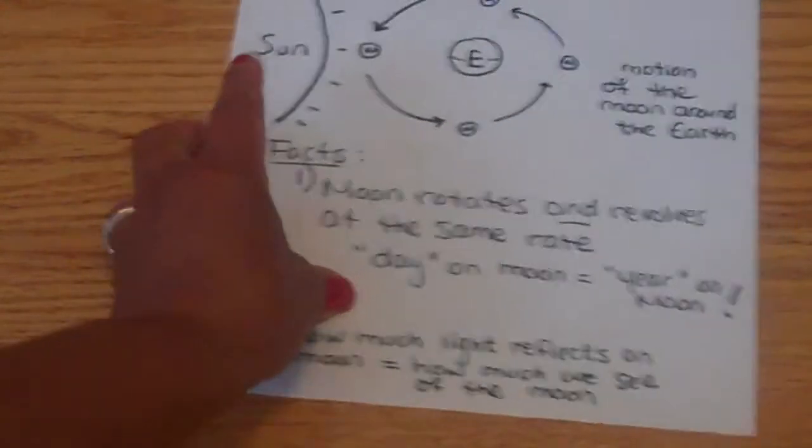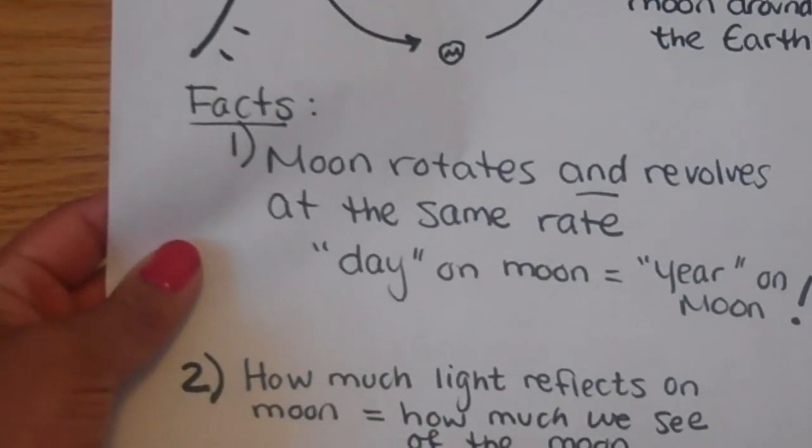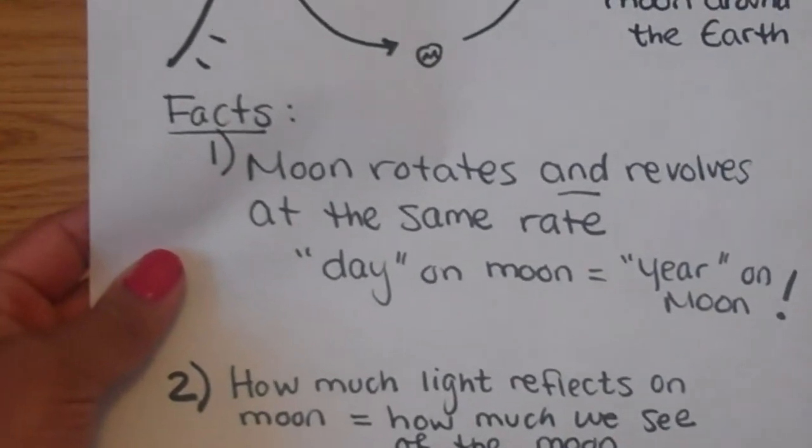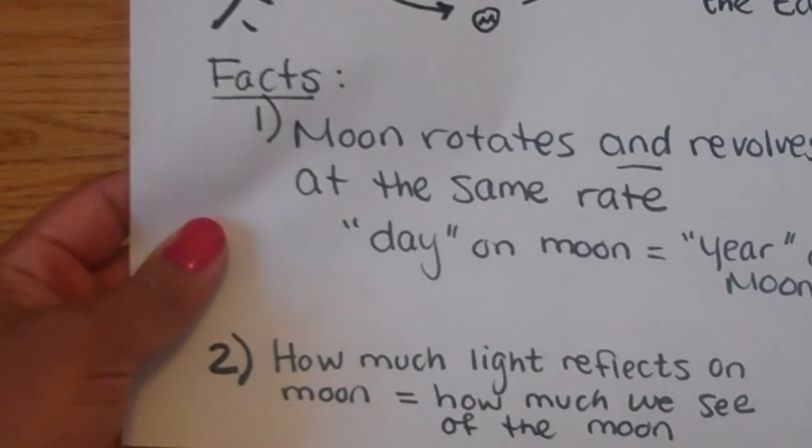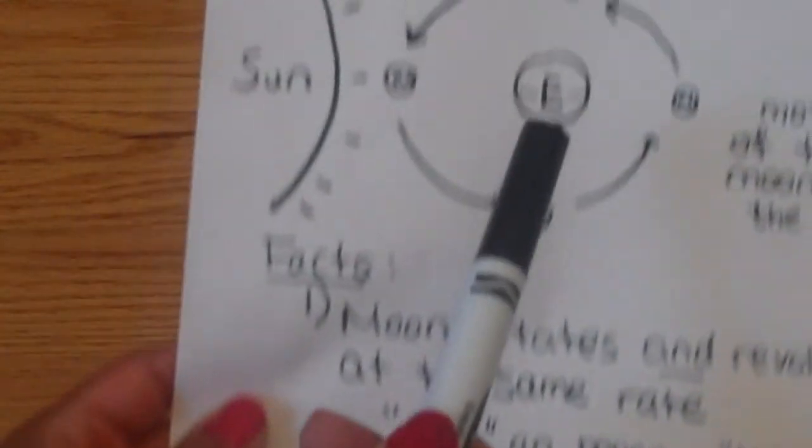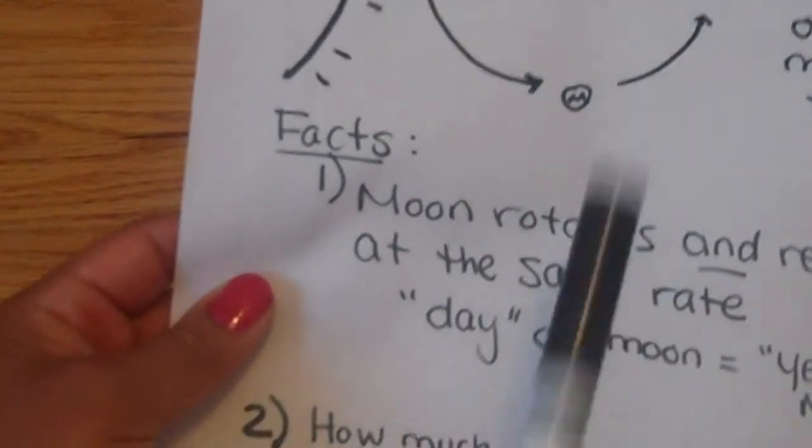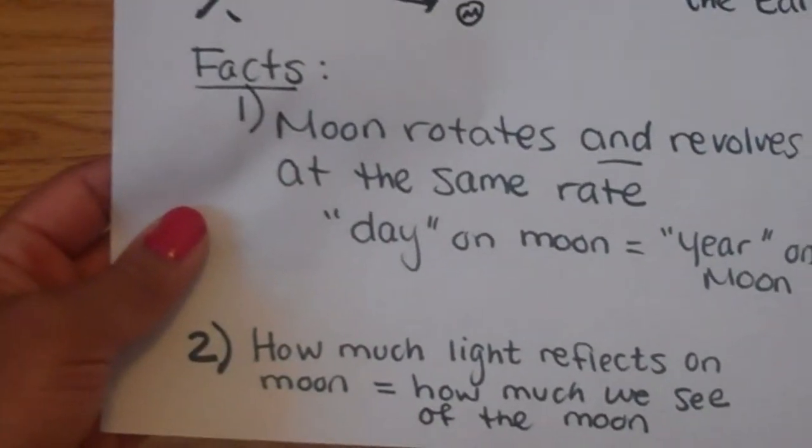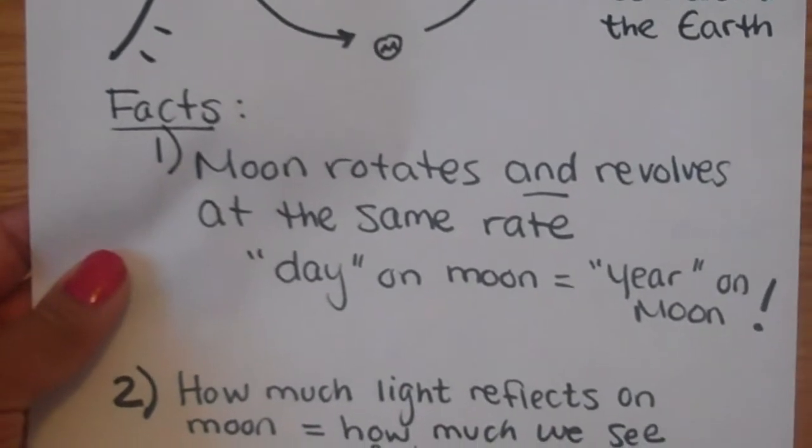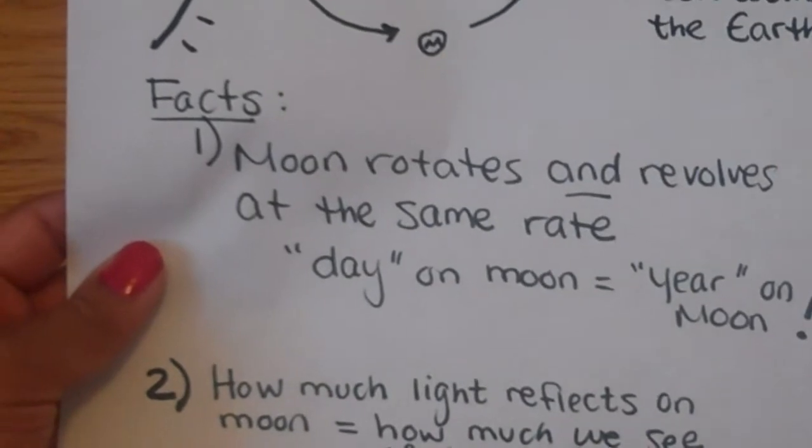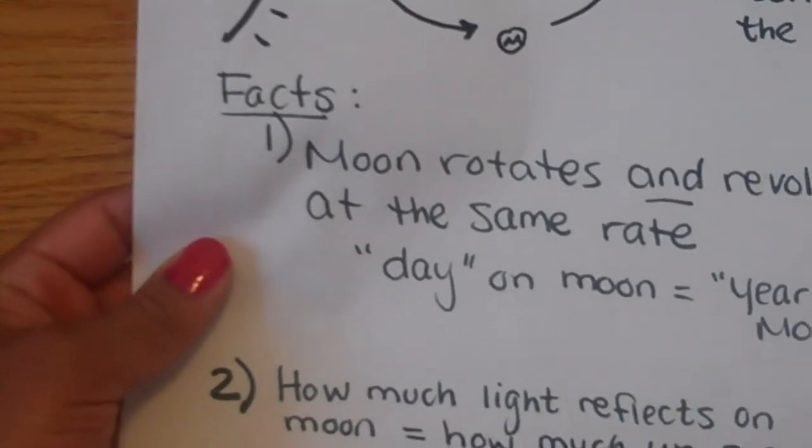Here are some facts. The moon rotates and revolves at the same rate. Rotate, just to remember from the other section, is when an object spins on its axis. So the moon spins on its axis at the same rate that it revolves—and revolve means to go around. Because of that, we see the same side of the moon at all times. Which is really interesting, the moon's day is the same amount of time as the moon year. That rate is 27.3 days of our Earth days. So 27.3 of our Earth days goes by, and you have a moon day and a year.